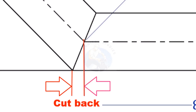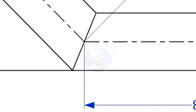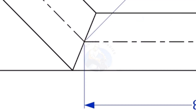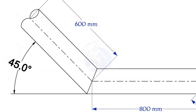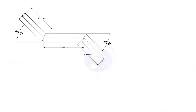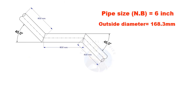To mark a miter cut, we need to know the cutback of the miter. In this offset, the nominal diameter of the pipe is 6 inch. The angle of the miter is 45 degrees. This method is suitable for cutback of any degree. The outside diameter of a 6 inch pipe is 168.3 millimeters.